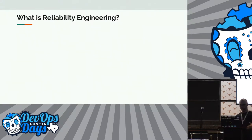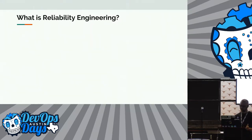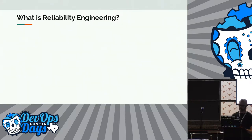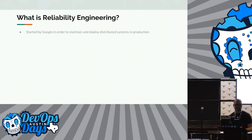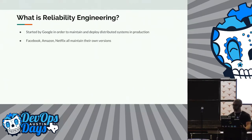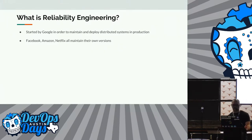Just a basic premise for anybody that doesn't know where site reliability engineering is - it was started by Google in order to maintain and deploy highly available distributed systems in production. Reliability engineering has since permeated Facebook, Amazon, Netflix, as well as smaller companies. You see startups starting with reliability engineering as a focus and building from the ground up that way.